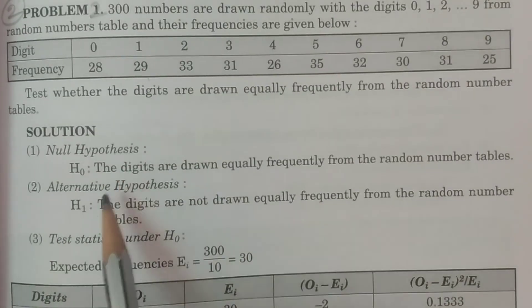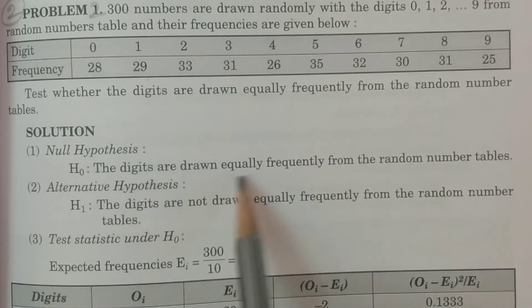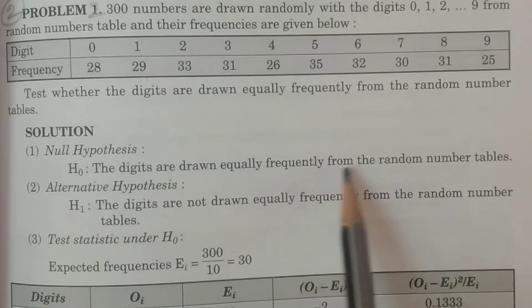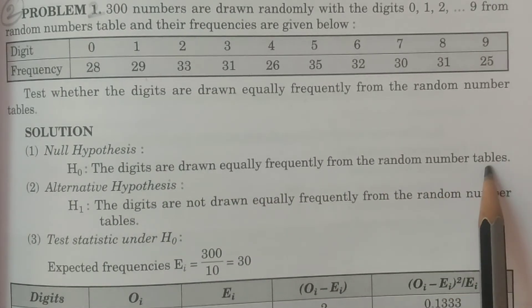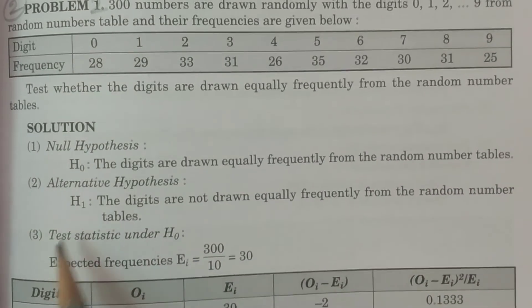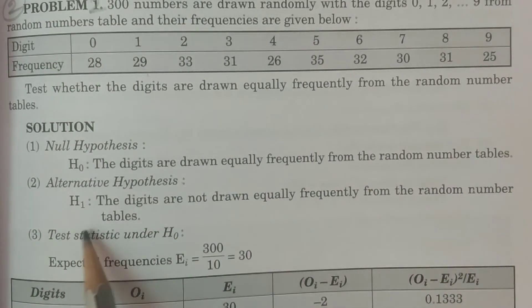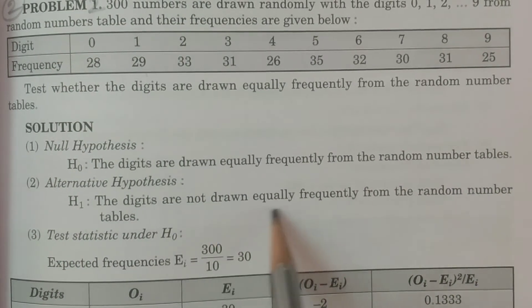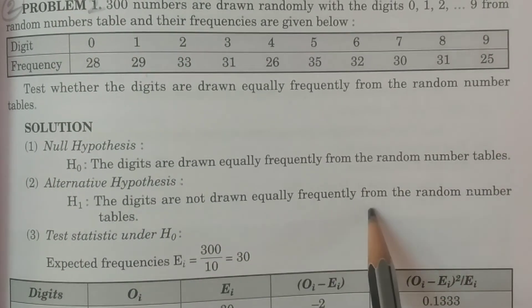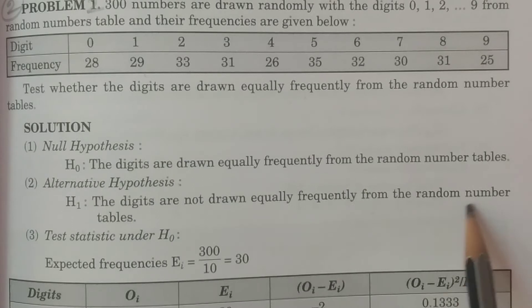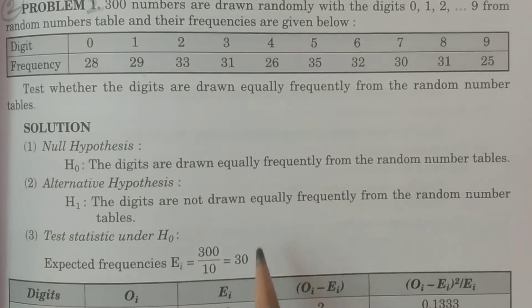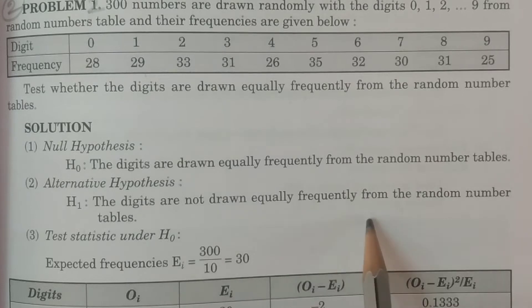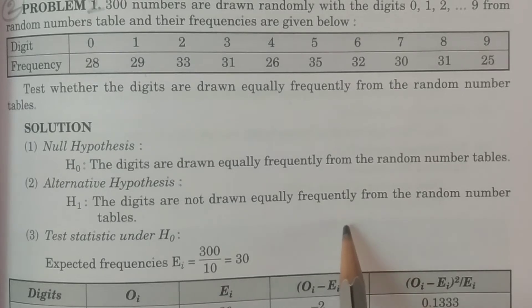The null hypothesis H naught: the digits are drawn equally frequently from the random number tables. And alternative hypothesis H1: the digits are not drawn equally frequently from the random number tables — that is, whatever is selected from the random number tables is not equally frequently drawn.